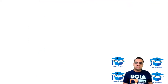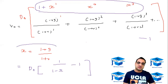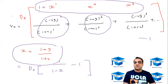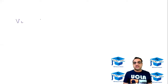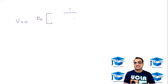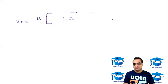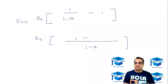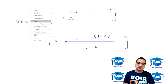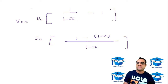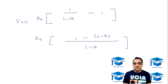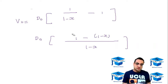To recap: x is one plus g upon one plus r. The first term one plus g upon one plus r is x, the next is x squared, then x cubed, but the one was missing so I added one then subtracted one. So one plus x plus x squared plus x cubed equals one upon one minus x. The value becomes D0 into one upon one minus x, minus one. Taking the common denominator one minus x: in the numerator we get one minus of one minus x.